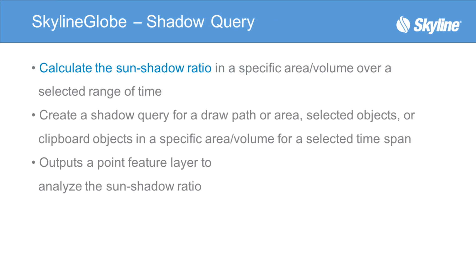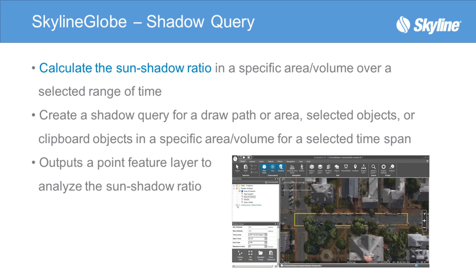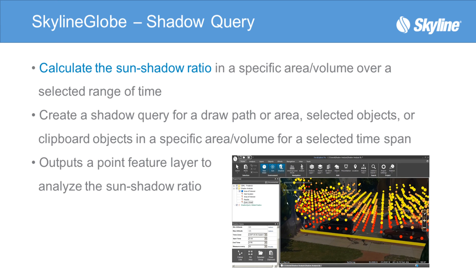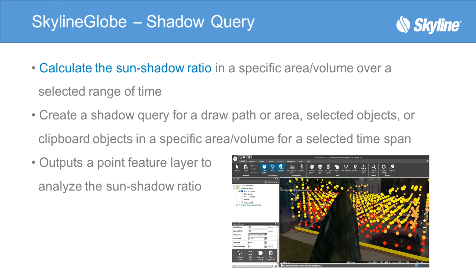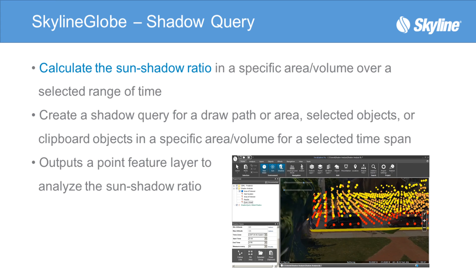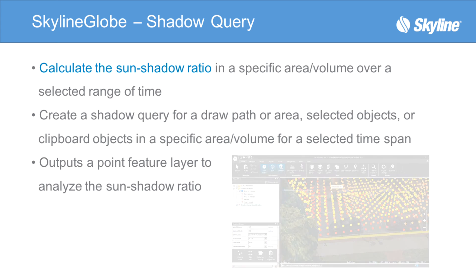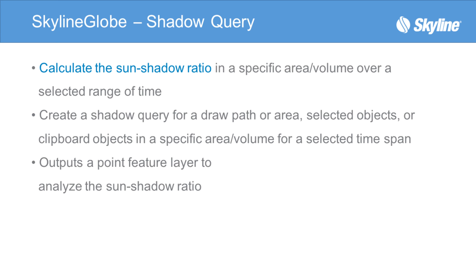Shadow Query calculates the sun shadow ratio in a selected area or volume over a selected time span. This produces a point layer of the sun shadow analysis showing which areas received more or less sun during a time frame. This can be calculated for a path, area, selected object, or a clipboard object.